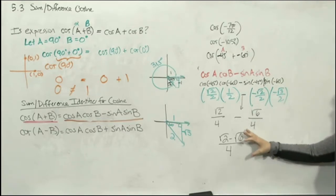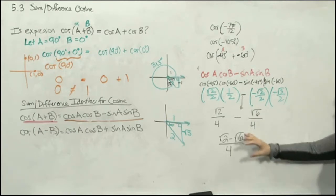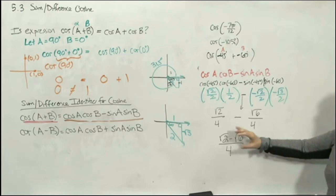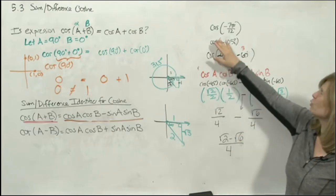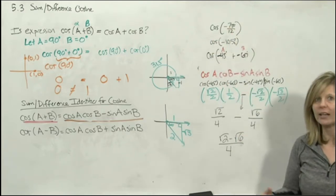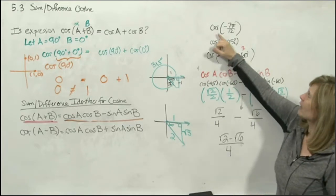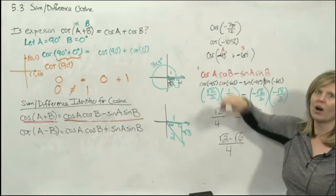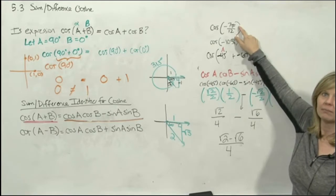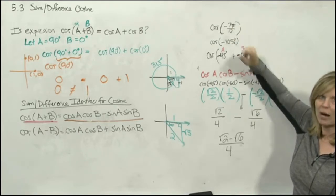That is the exact answer. If you want to verify, type cosine(−7π/12) into your calculator — but make sure you switch to radian mode, because that's in radians.